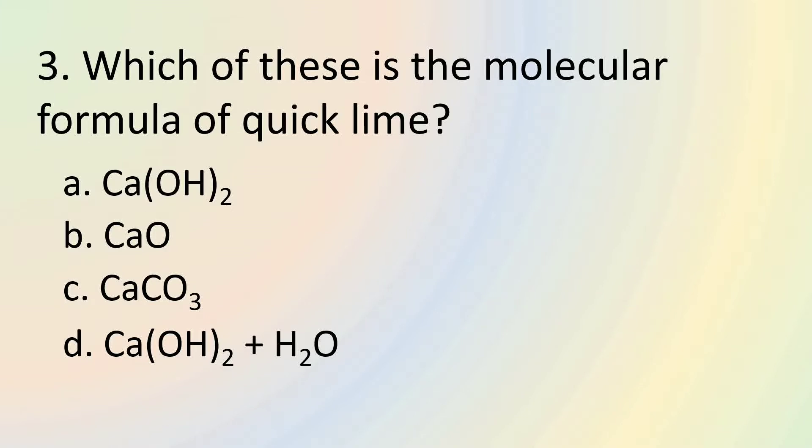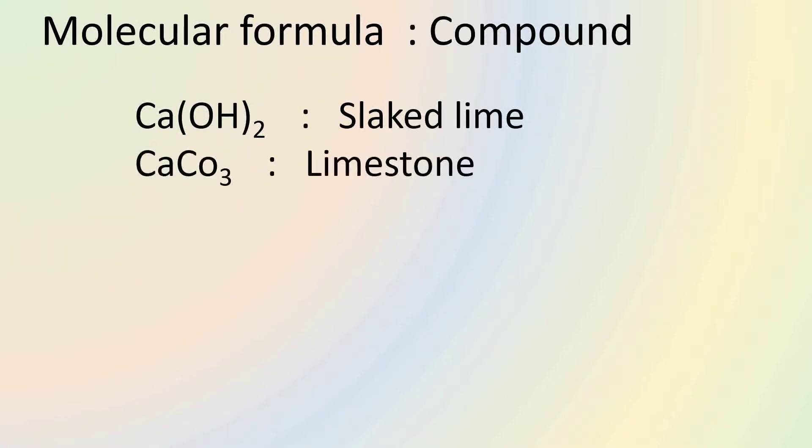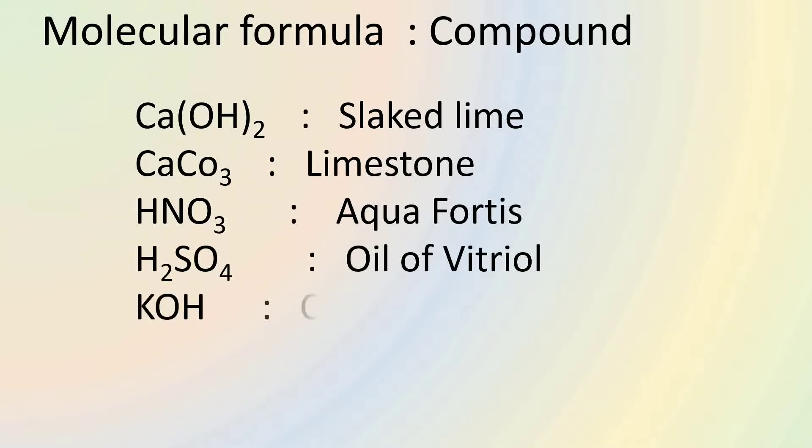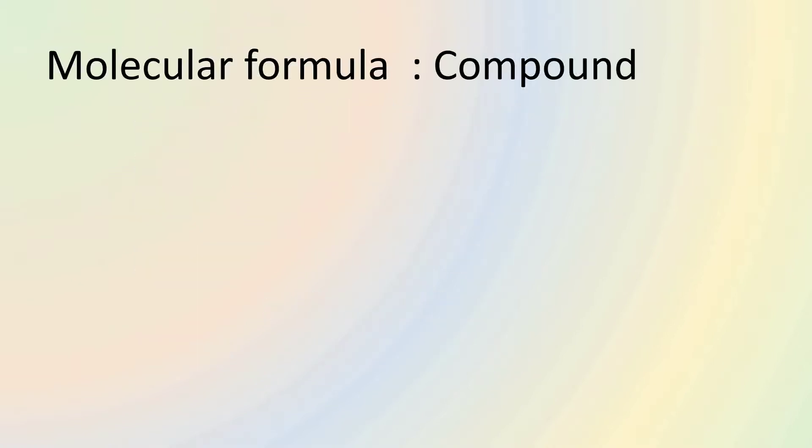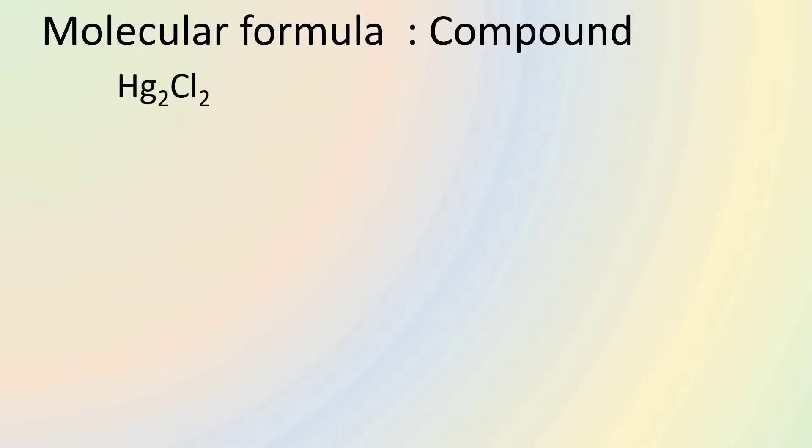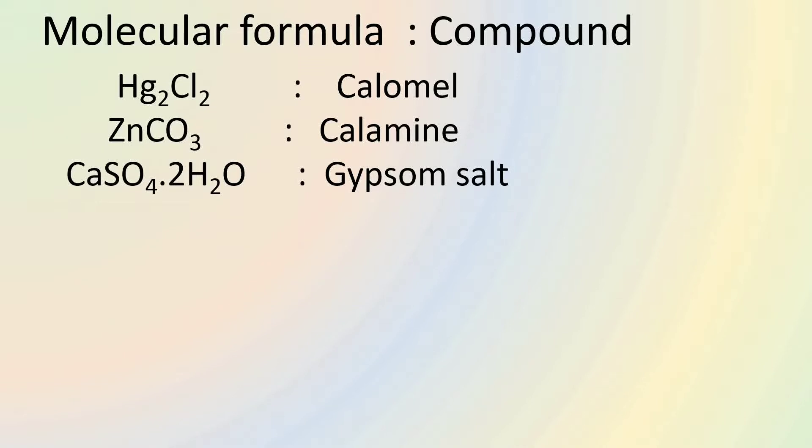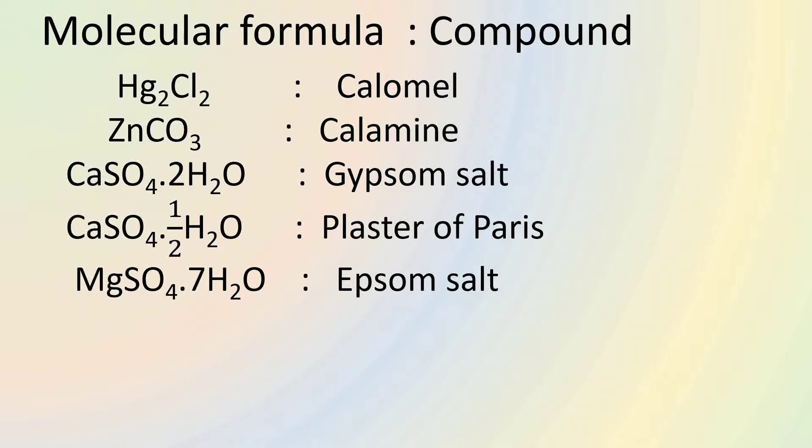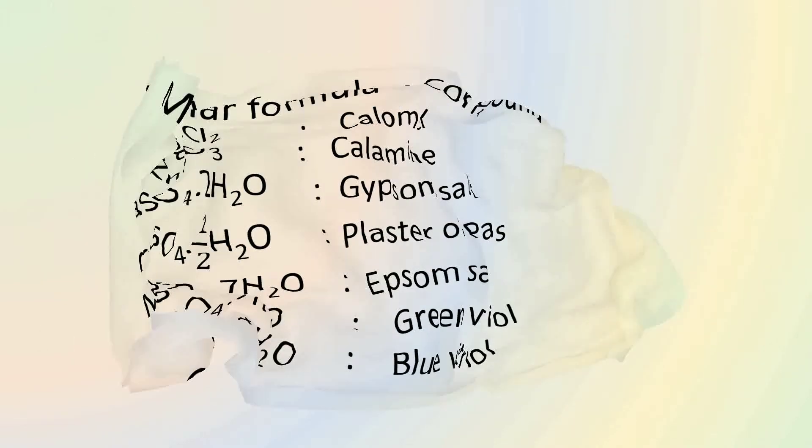The molecular formula of quick lime is calcium oxide CaO. Calcium hydroxide Ca(OH)2 is slaked lime. Calcium carbonate CaCO3 is limestone. HNO3 is aquafortis. H2SO4 is oil of vitriol. KOH is caustic potassium. NaOH is caustic soda. MnO2 is black oxide. Fe2O3 is red oxide. N2O is laughing gas. CH4 is marsh gas. NaHCO3 is baking soda. Na2CO3 is washing soda. Hg2Cl2 is calomel. ZnCO3 is calamine. CaSO4·2H2O is gypsum salt. CaSO4·½H2O is Plaster of Paris. MgSO4·7H2O is Epsom salt. FeSO4·7H2O is Green Vitriol and CuSO4·5H2O is Blue Vitriol.